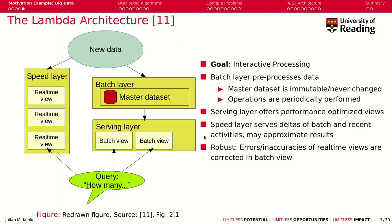To address the issue of interactive processing, the term Lambda architecture has been coined. Here we see a basic strategy to achieve this goal. When we have new data, the data is processed in two fashions. We have a speed layer that is responsible for creating a real-time view on new data by using, for example, approximative algorithms to compute some value.